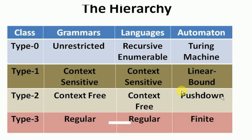In pushdown automata, we can accept only those languages or grammars which can be deduced with the storage space of only one stack. Next is linear bounded automata, in which we can deduce those languages for which two stacks can be used. In Turing machine automata, there are more variations and much more complex methods to accept languages.